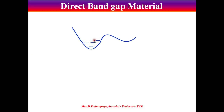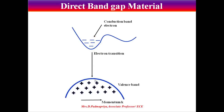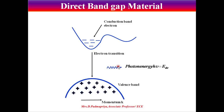Looking at the diagram, this is the conduction band and this is the valence band. Here, the electron-hole recombination takes place directly. The electrons and holes have the same momentum vector value. As a result of this electron-hole recombination, a photon energy H-mu is released.